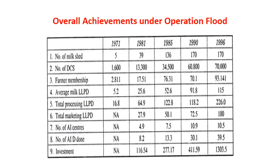At a glance, the overall achievement under Operation Flood from 1971 to 1996 across all three phases shows: milk sheds increased from 5 to 170; dairy cooperative societies from 1,600 to 70,000; farmer members from 2.8 lakh to 93 lakhs; average milk production from 5.2 lakh tons to 115 lakh tons. Total processing, total marketing, AI centers — everything increased, with investment growing from 116 crores in Phase 1 to 1,300 crores in Phase 3.